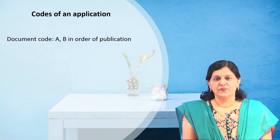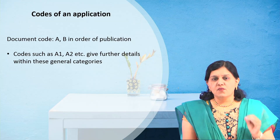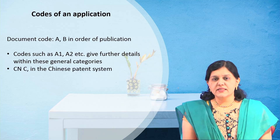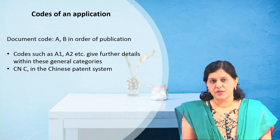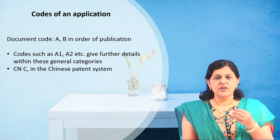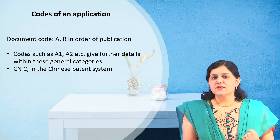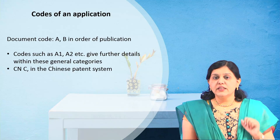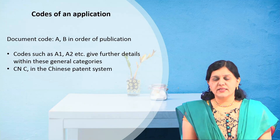The next code is the document code — a simple code that indicates what kind of document you are looking at. It can be considered a status code of the patent application, telling you which stage of prosecution the patent is in. For example, A is for application and B is for a granted patent. However, these codes may differ from country to country.